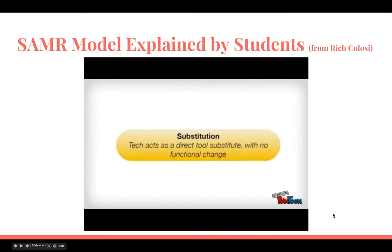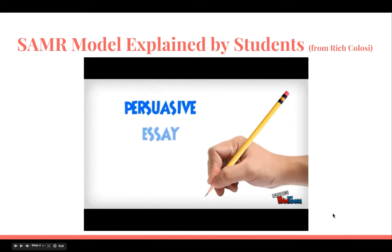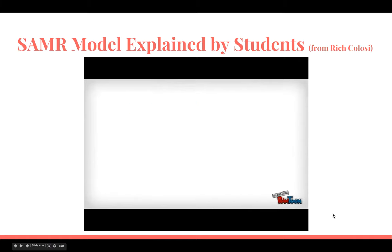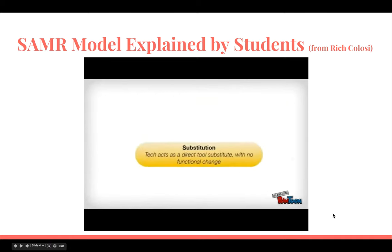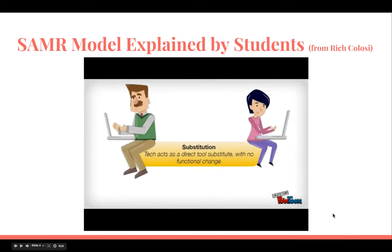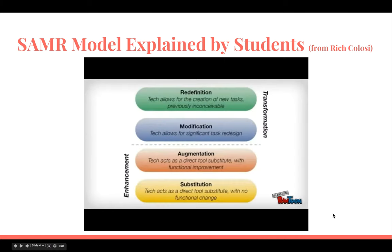There are four different levels and two different sections in SAMR. The first level is substitution — this is where the technology acts as a direct substitute. Take the task of persuasive essay writing: I could write an essay by hand, or I could type an essay using the basic features of a word processing program. The task is the same and there's no functional change — the technology is being used as a substitute. Lots of teachers start out at this level, but substitution is not a bad thing; even the best teachers visit this level from time to time.